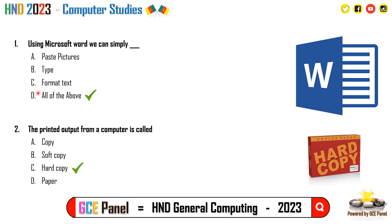Question 2: The printed output from a computer is called a hard copy. What you print out using your printer is called a hard copy — like the books you have in school, or your formula booklet for HND. The key for question 2 is C.